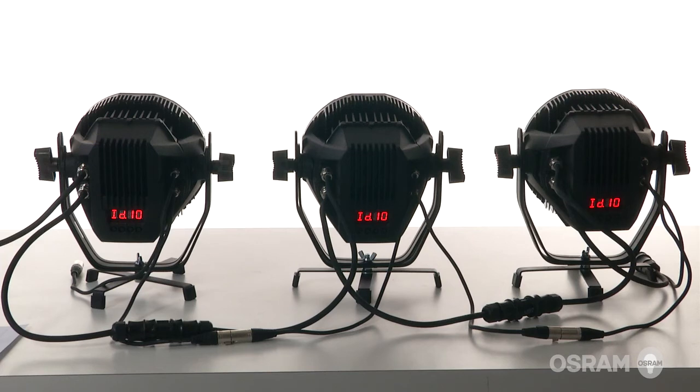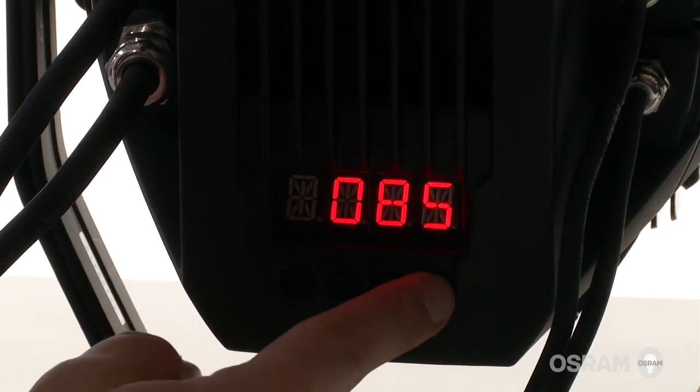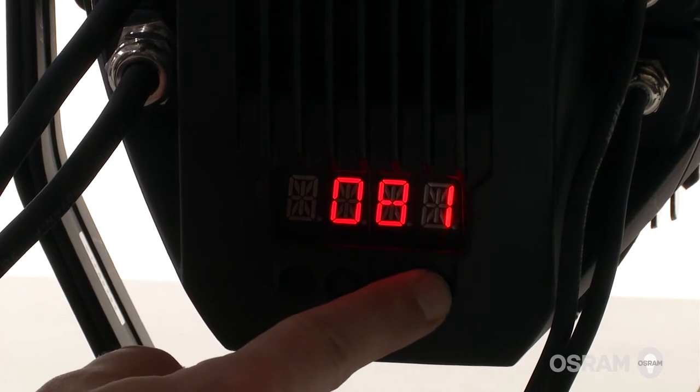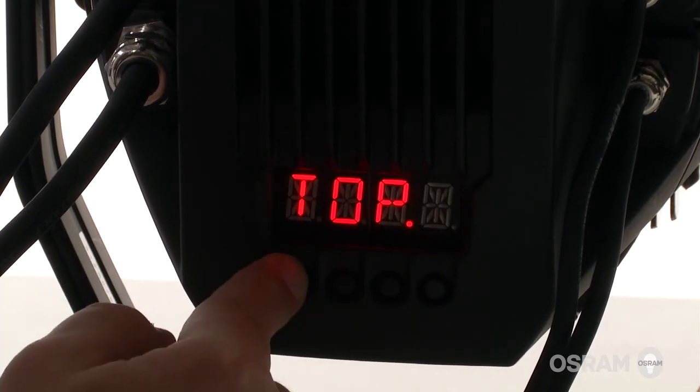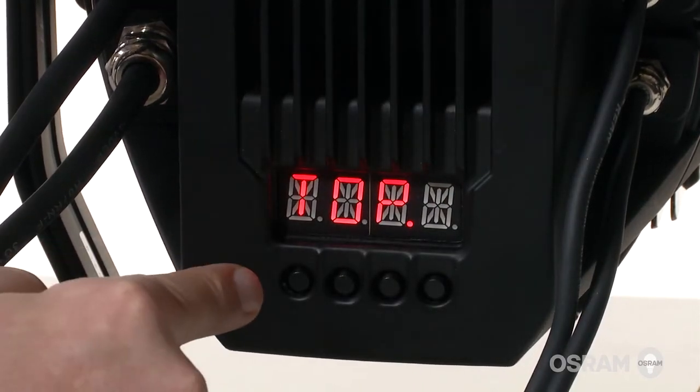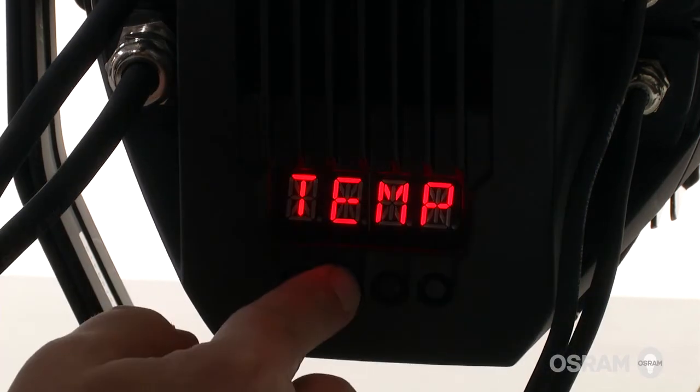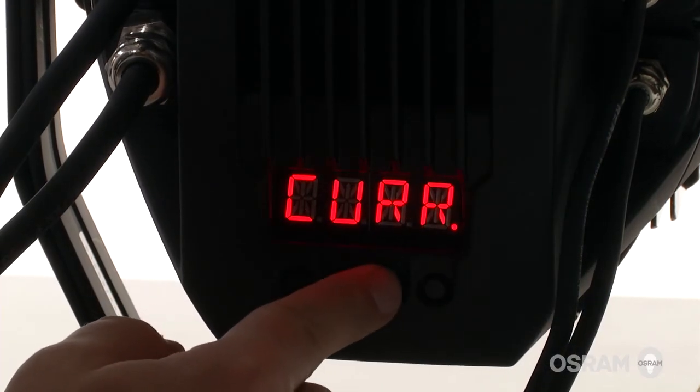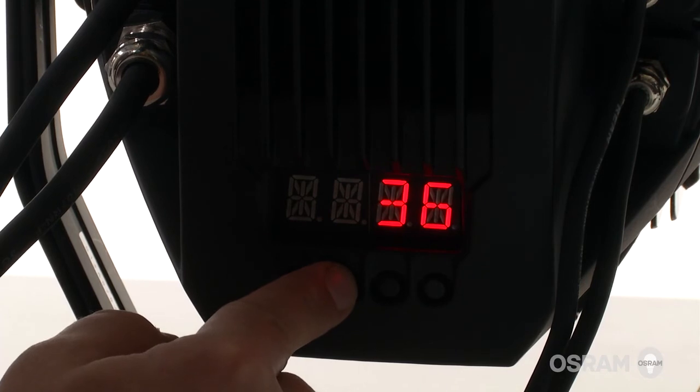To protect the fixture from damage by overheating, you can set the maximum ambient temperature value via TEMP in the menu. In this field you can check the current as well as the maximum predefined set temperature.